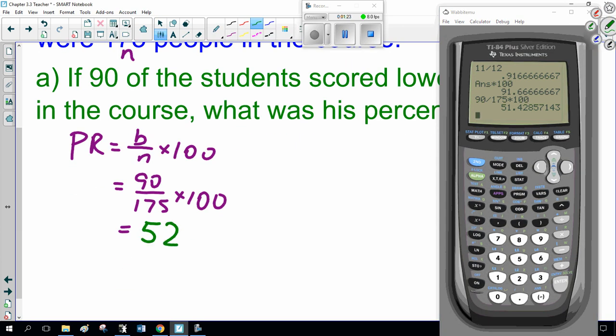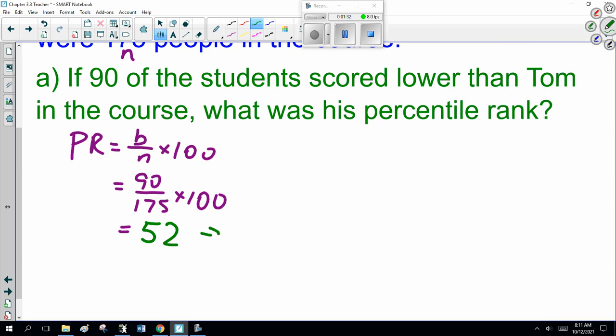Call it 52nd percentile, because I just remembered you're really not supposed to go to decimal places. So, 52%, his percentile score is 52, which means 52% scored less than him, scored less than Tom.